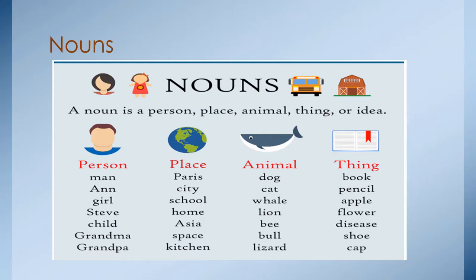You have seen some pictures and some examples about it. If we are talking about person, I can tell you that a noun using a person can be a man, any name like Ann, a girl or a boy, Steve that is another name, child, grandma or grandpa. If we are talking about place, it could be a country like Paris, a city like Guatemala City, school, home, Asia, space, kitchen.